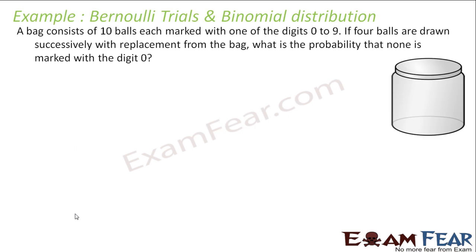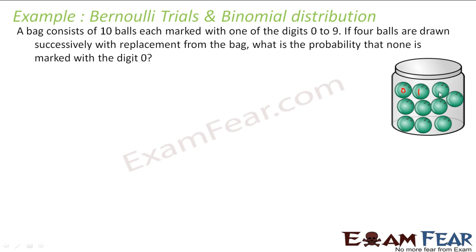For example, a bag contains 10 balls, each marked with one digit 0 to 9. If 4 balls are drawn with replacement — so it is again an independent event — what is the probability that none of them is marked with 0?